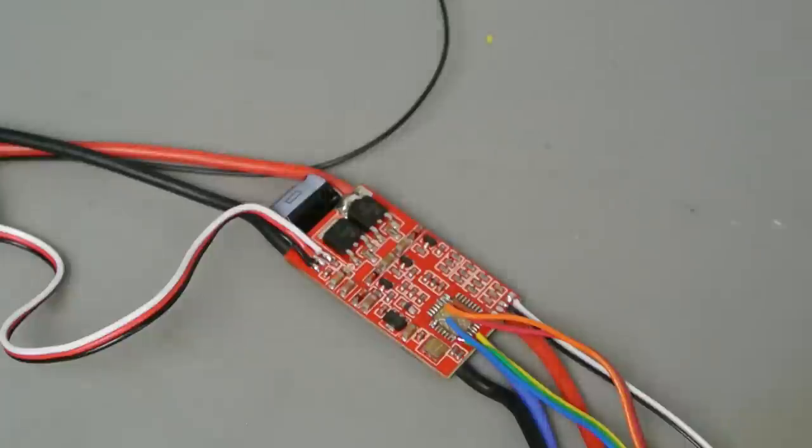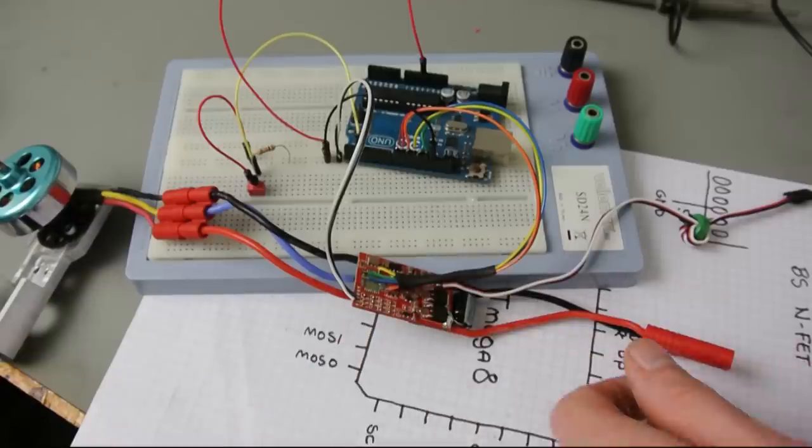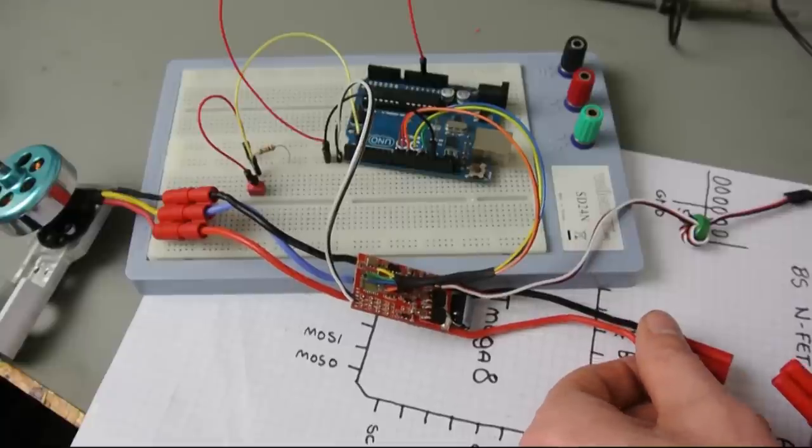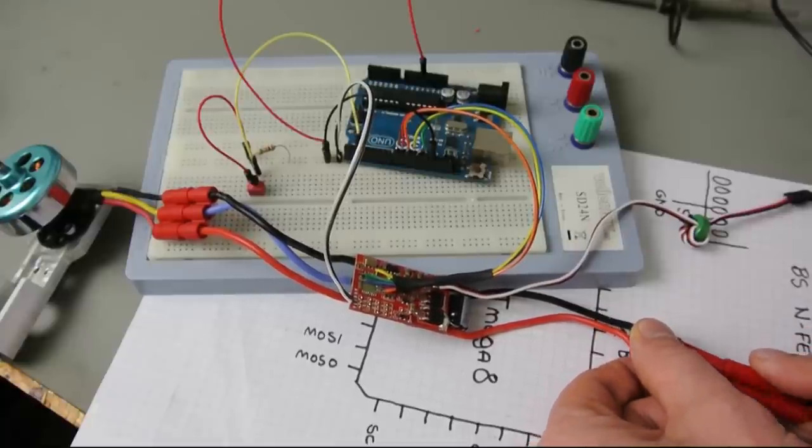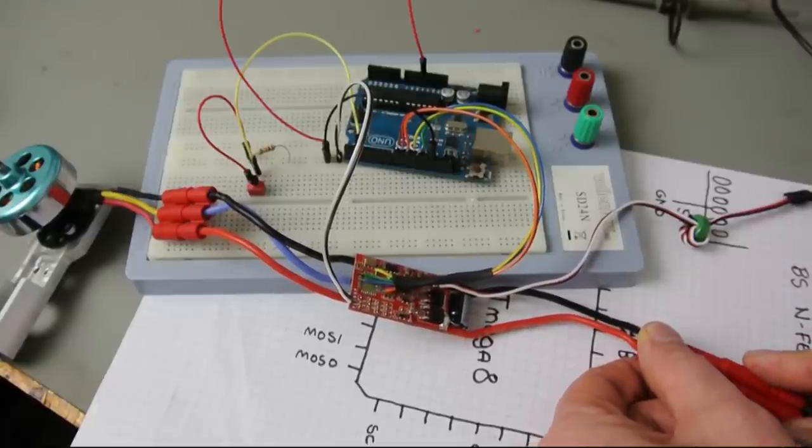If you want to try something like this yourself, it's best to debug it first with a current limiting power supply. Because those batteries can produce pretty high currents, which can make bugs in your code quite expensive.